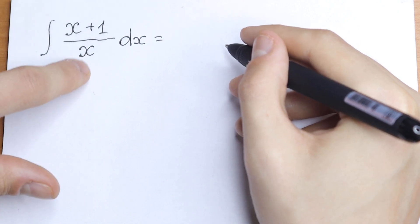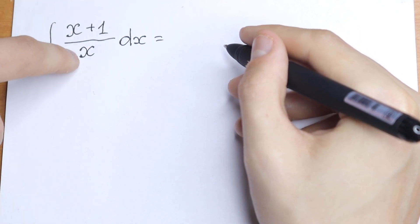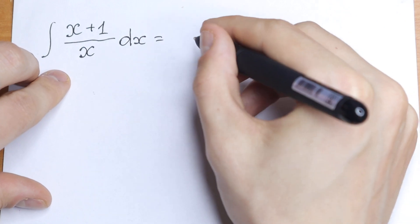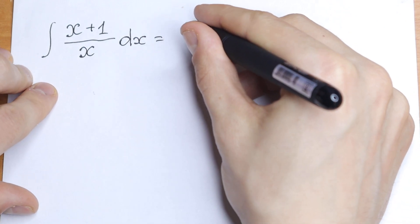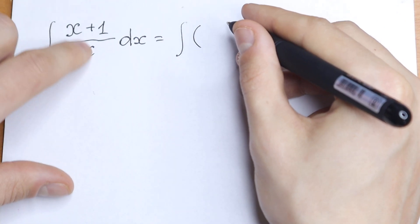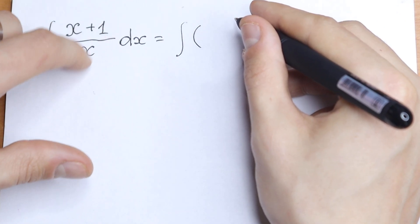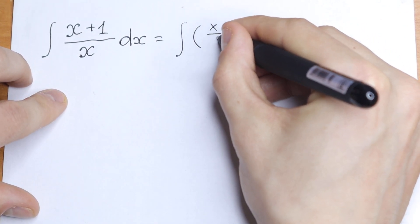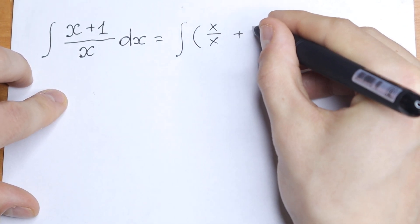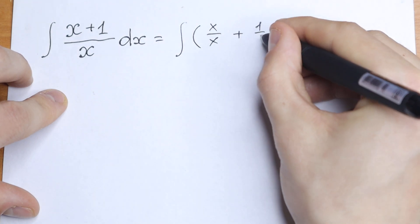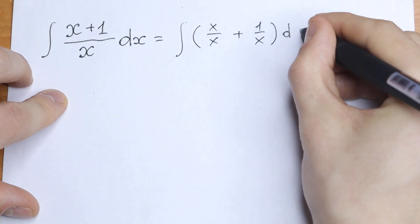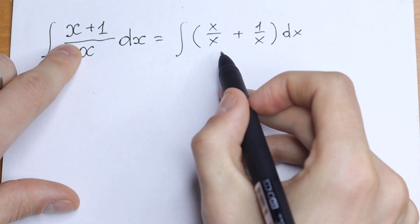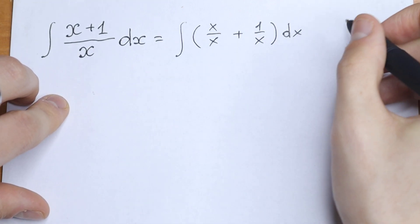We can divide x by x and 1 by x, because x is our common denominator. Take a look at what we'll have: if we divide all of these parts by x, we will have x over x plus 1 over x, dx. And if we add this, we will have the same as what we started with.